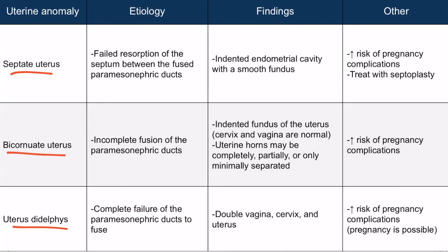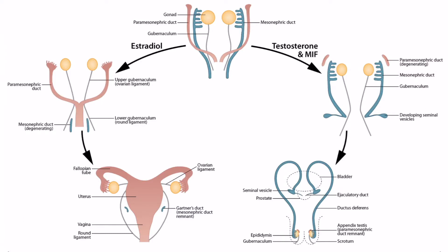A septate uterus is due to failed resorption of the septum between the fused paramesonephric ducts. Initially, the paramesonephric ducts are separated from one another — one on the left and one on the right. They fuse together towards the bottom, and a septum is initially formed between the two ducts, which is eventually obliterated. If this process fails to occur, then the patient will have a persistent septum within the endometrial cavity, known as a septate uterus.